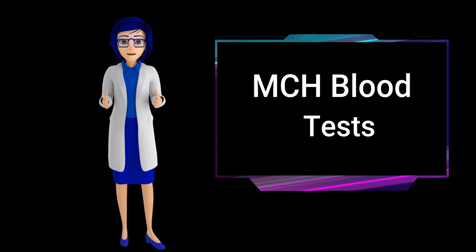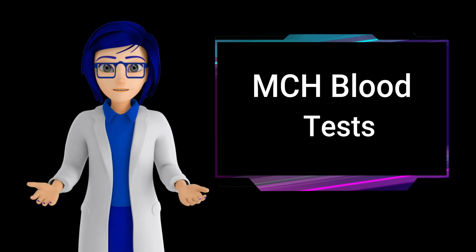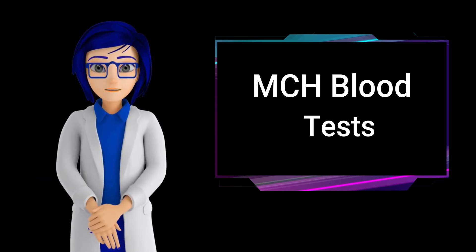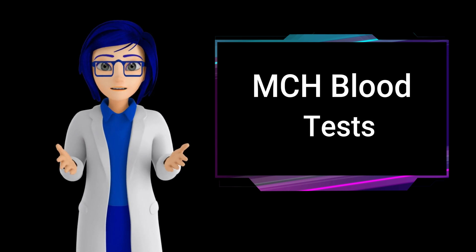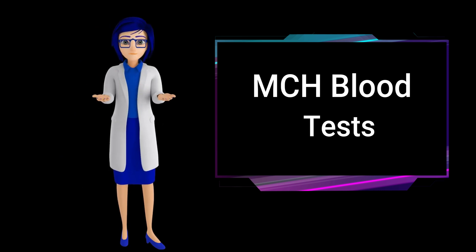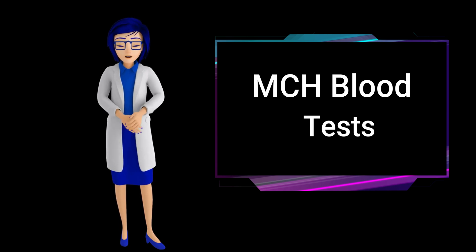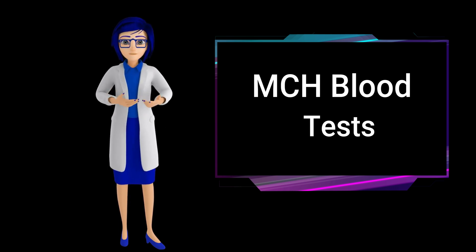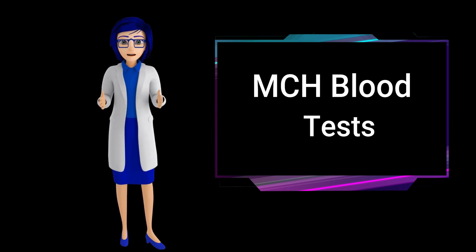Vitamin deficiencies: addressing deficiencies in vitamins like B6, B9 (folic acid), or B12 can sometimes correct low MCH levels. Chronic diseases: treating the underlying condition can help normalize MCH levels. Blood loss: addressing the cause of bleeding and replenishing lost blood can correct low MCH due to acute blood loss.